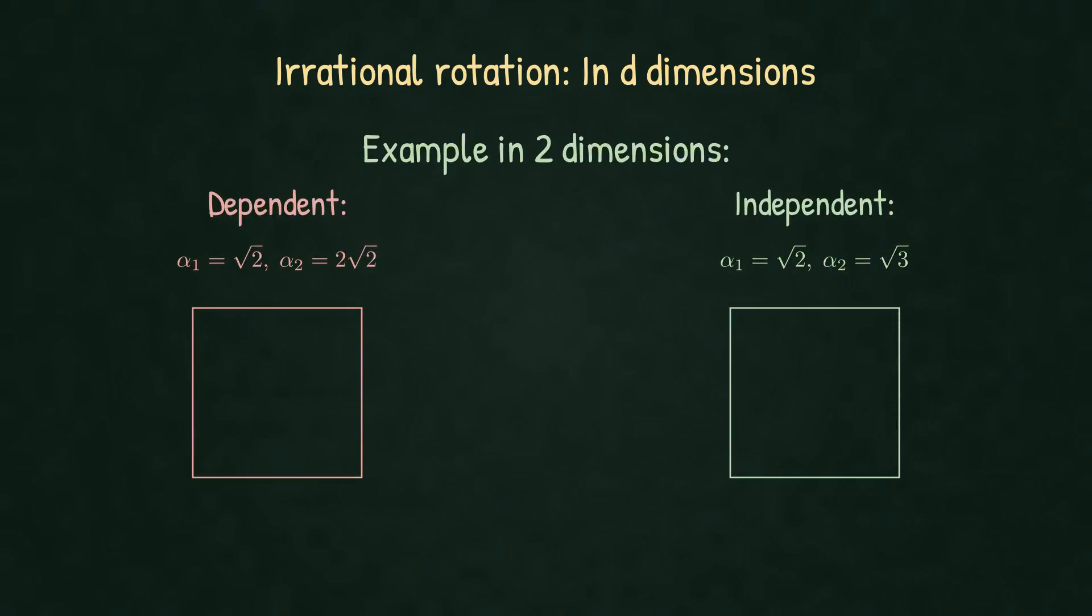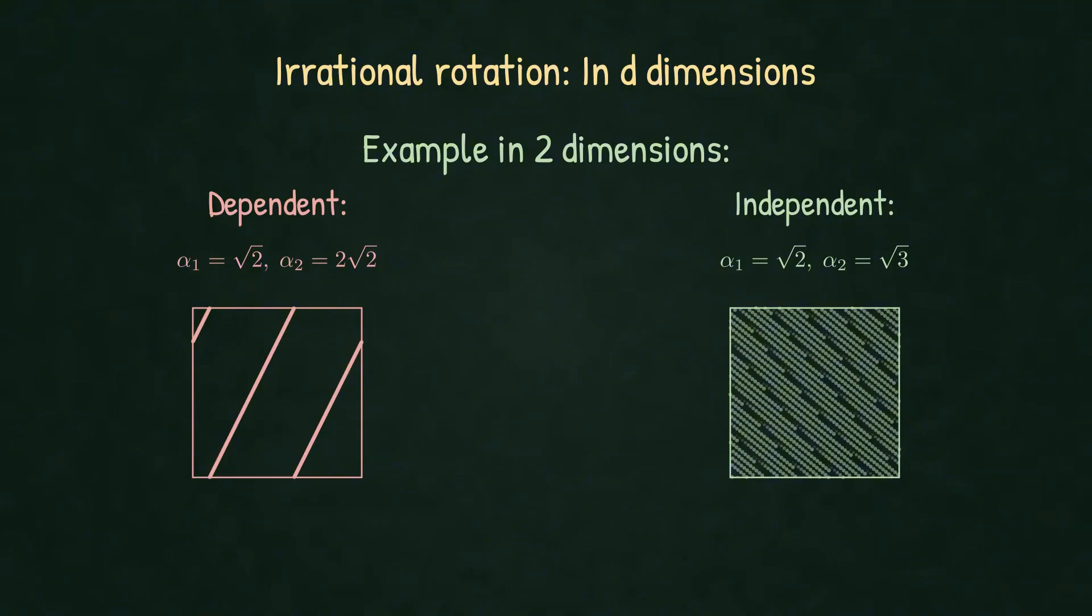In d-dimensions, dependent α's form lines. They are not uniform. Independent α's fill the space uniformly. This is our generator: irrational rotations with independent α's.